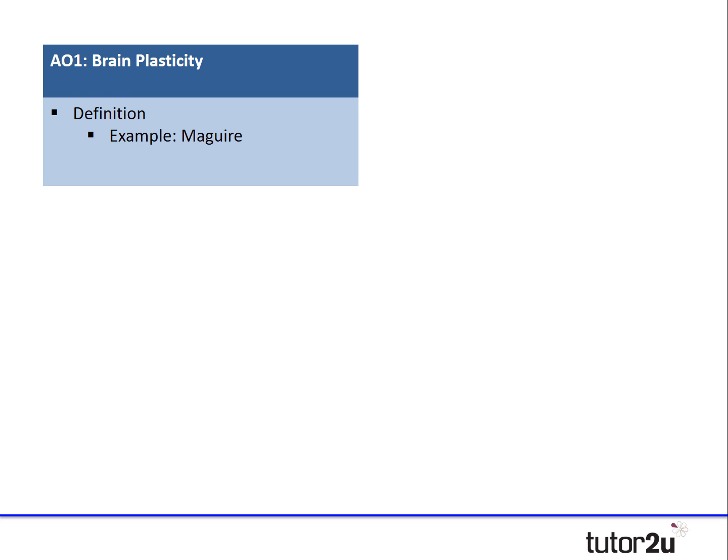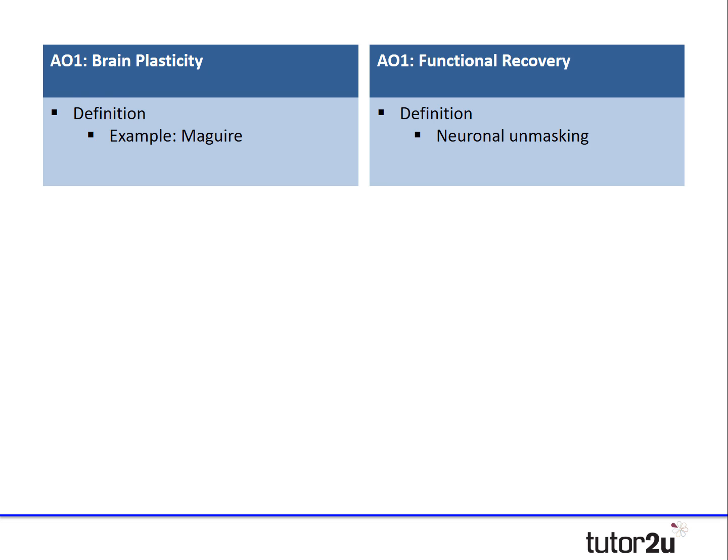Let's start by considering our AO1. The question asks you to describe and evaluate evidence of plasticity and functional recovery. There are two key elements that the question wants you to focus your answer on: brain plasticity and functional recovery. My AO1 will certainly include a definition and an example of brain plasticity — in this case I've used Maguire — and a definition of functional recovery, which I'm going to elaborate with specialist terminology and use the term neuronal unmasking.